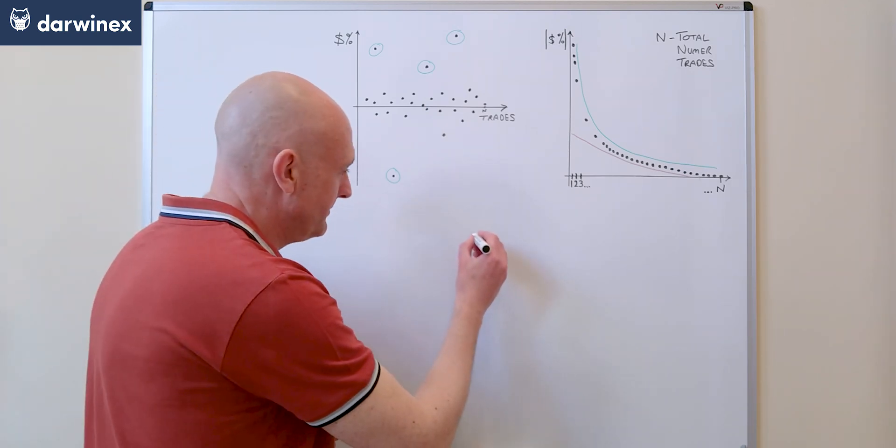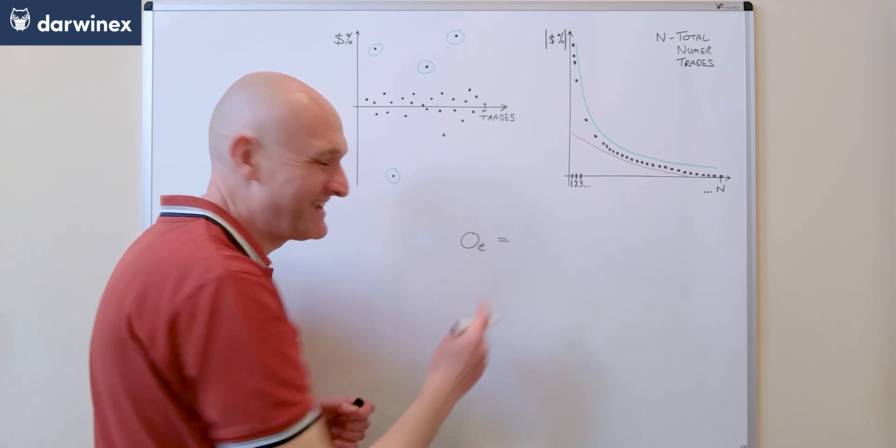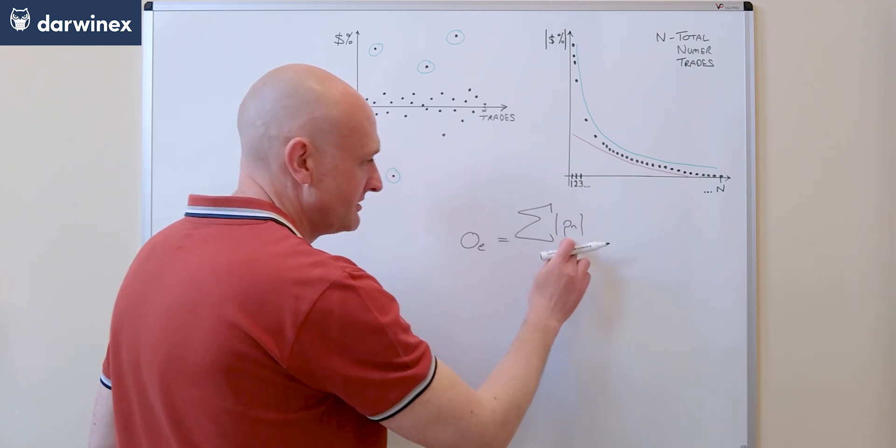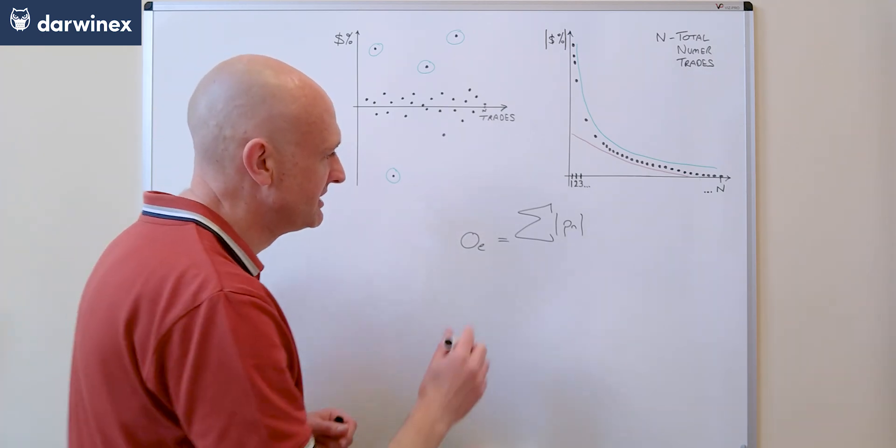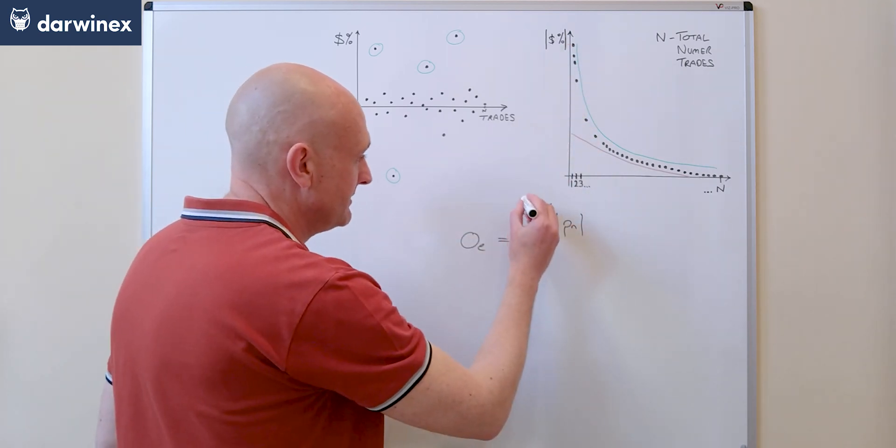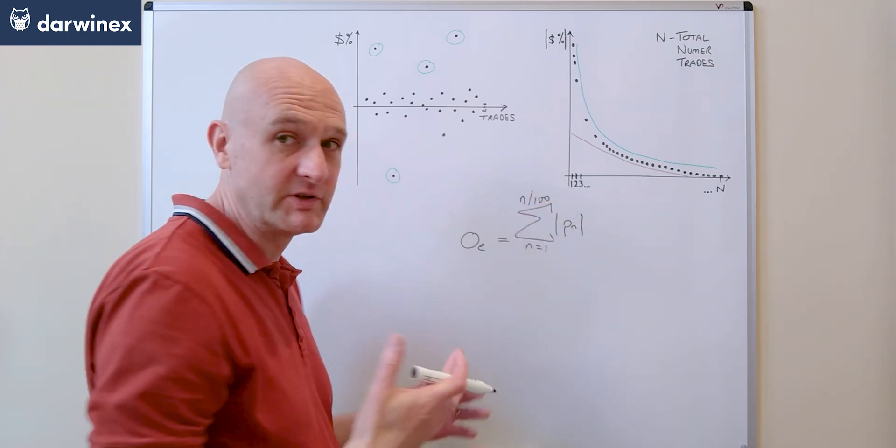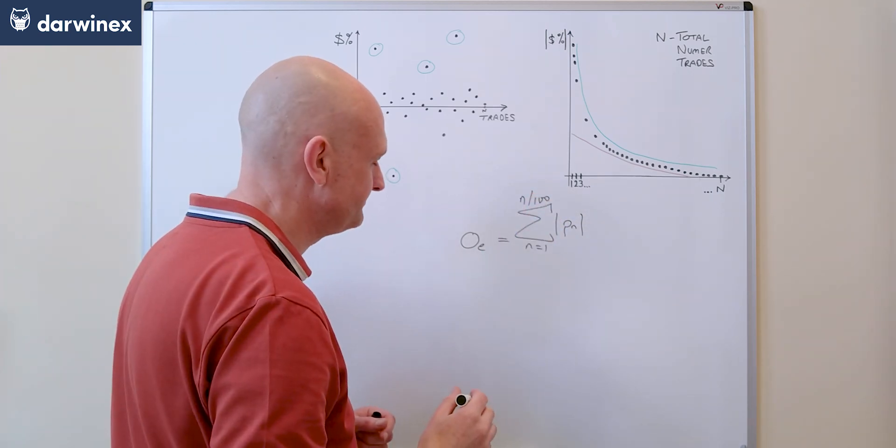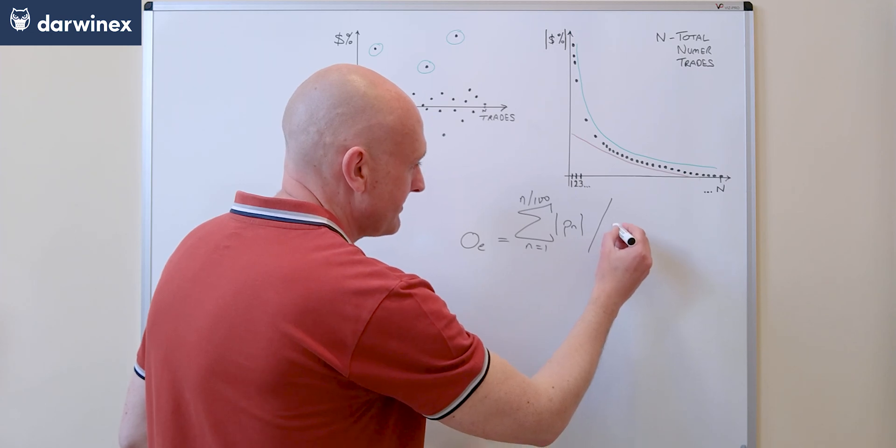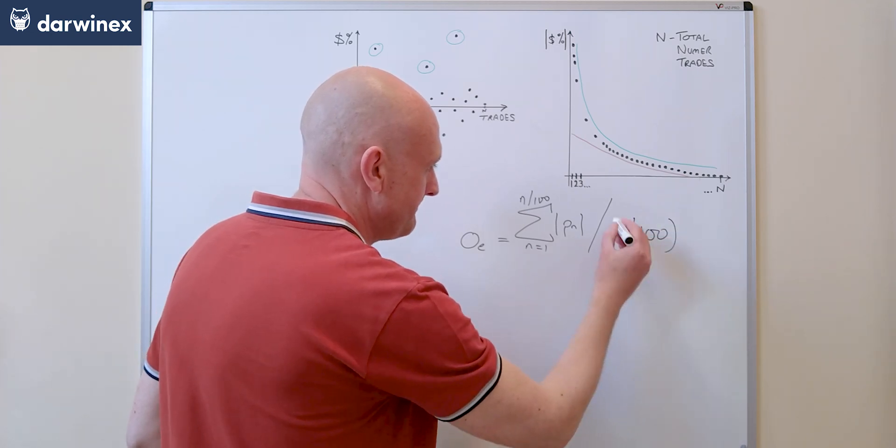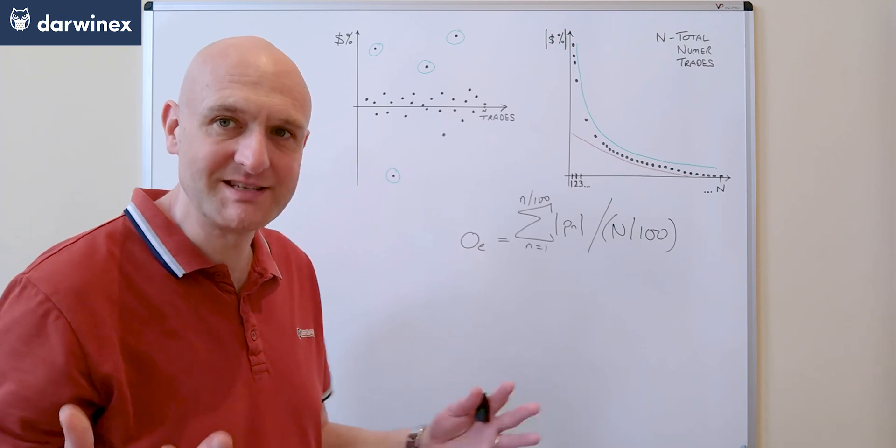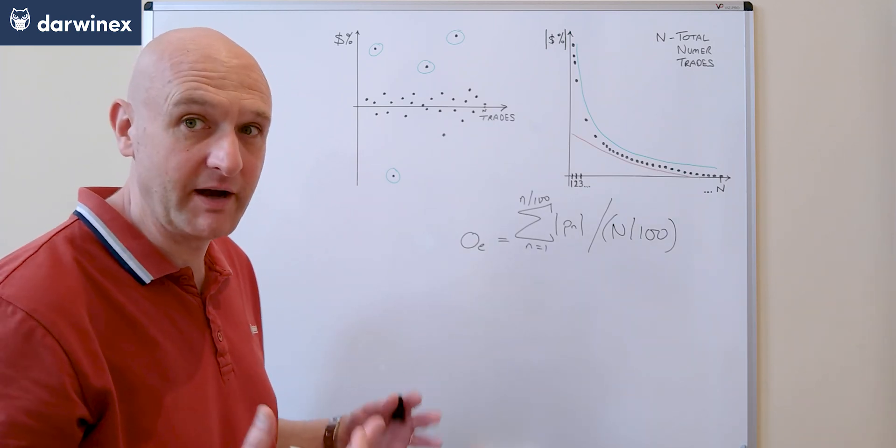So the overfitting score due to events can be calculated as the sum of the absolute magnitude of the profit or loss of each individual trade from the first trade over here on the left hand side to n over 100, which represents the first one percent of trades. And then of course we're looking at an average here, so we're going to divide this by n over 100. So this gives us the trades that are in the top section here and potentially affected by news events.